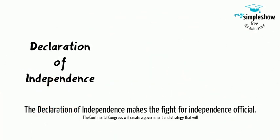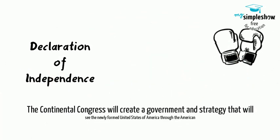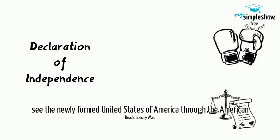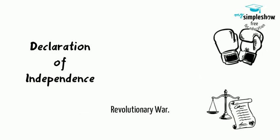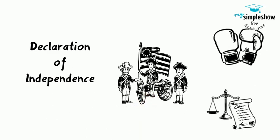The Declaration of Independence makes the fight for independence official. The Continental Congress will create a government and strategy that will see the newly formed United States of America through the American Revolutionary War.